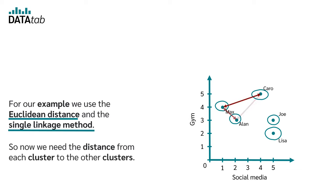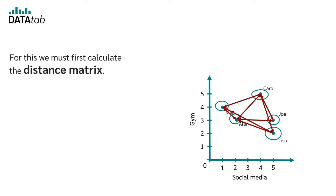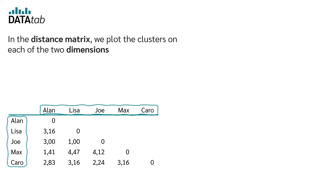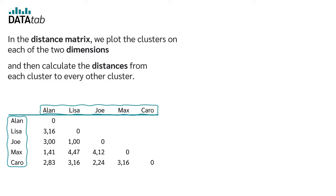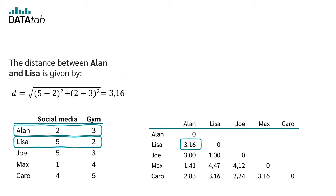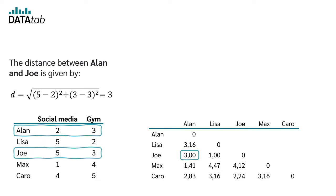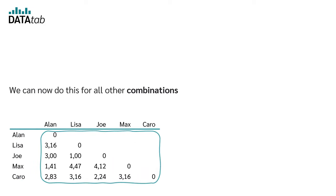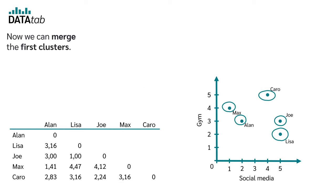So we need the distance from each cluster to the other clusters. For this, we must first calculate the distance matrix. In the distance matrix, we plot the clusters on each of the dimensions and then calculate the distances from each cluster to every other cluster. The distance between Alan and Lisa is the square root of (5−2)² plus (2−3)², which is 3.16. The distance between Alan and Joe is the square root of (5−2)² plus (3−3)², which is 3. We can do this for all combinations until we have calculated the entire distance matrix.